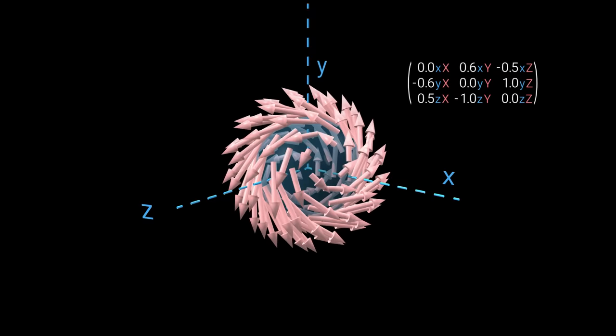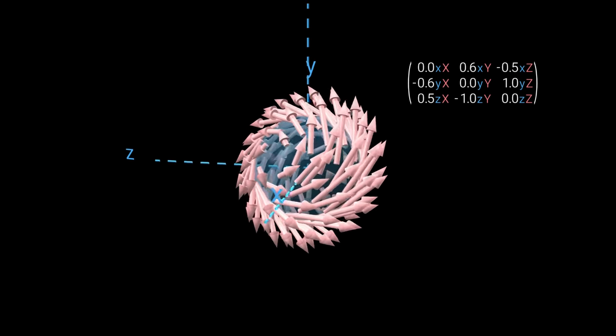This is an anti-symmetric matrix. The diagonal is zero, and the part below the diagonal is the negative of the upper part. It might remind you of electromagnetic fields, and there is a connection.